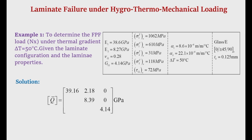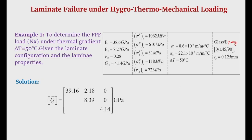We have taken an example: to determine the first ply failure load of a laminate under a thermal gradient of 50°C. The laminate is a glass-epoxy laminate with stacking sequence [0/+45/-45/90]s — as you may recognize, this is a quasi-isotropic laminate. Altogether there are 8 layers in this symmetric laminate.